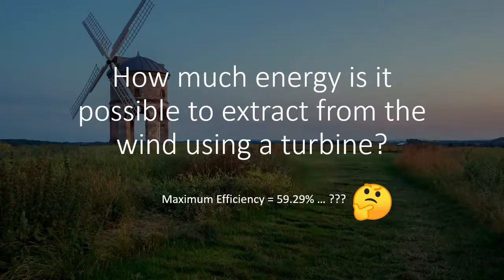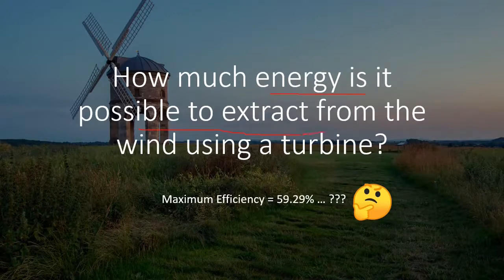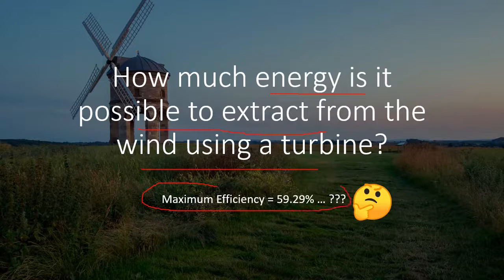In this section we are going to discuss a very interesting fact: how much energy is it possible to extract from the wind using a wind turbine? By calculation, the maximum efficiency of wind turbines can be 59.26%. This is also known as the Betz limit. Let's see the proof of the Betz limit.